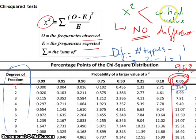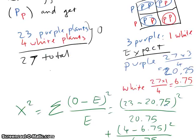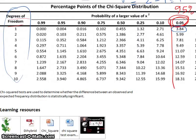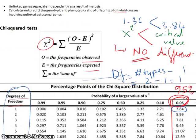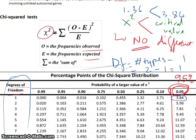So the critical value in this case is 3.84 and our chi-square number is 1.36. That chi-square is more than critical number. So we can conclude that, oh yeah, our cross is fine. There's nothing wrong with it.